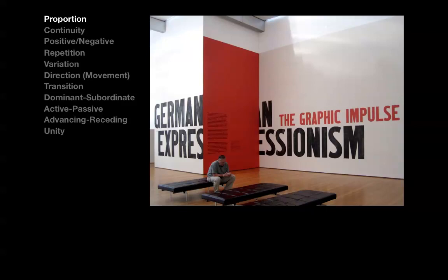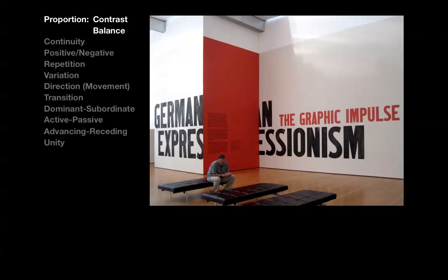Our first discussion will be about proportion. Talking about proportion is essentially talking about the amounts used — the amount of red versus the amount of black versus the amount of white, the amount of small shapes versus the amount of large shapes, and so on. There are two categories of proportion that deserve our attention: contrast and balance.